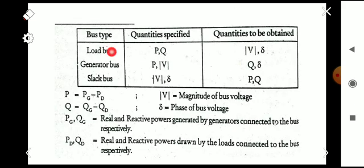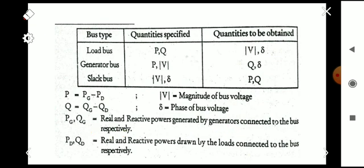For a load bus, the quantities specified are real and reactive power P and Q, and we find the magnitude and phase angle of the voltage using load flow study. For a generator bus, P and the magnitude of the voltage |V| are specified, and we have to find Q and delta. For the slack bus, |V| and delta are specified, and we have to find P and Q — where P is PG minus PD (real power generated minus real power drawn by loads) and Q is QG minus QD (reactive power generated minus reactive power drawn by loads).